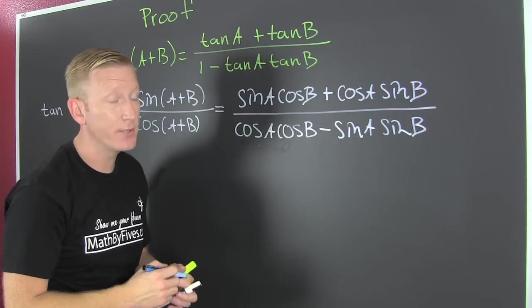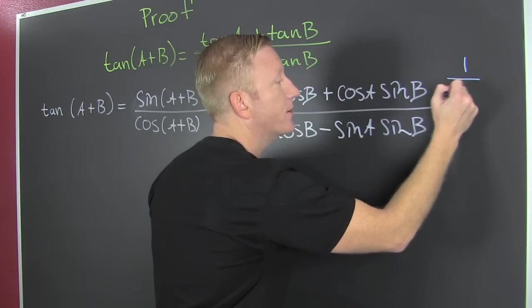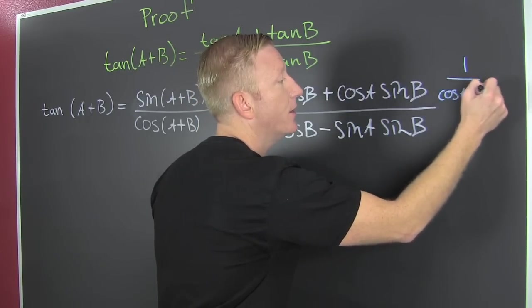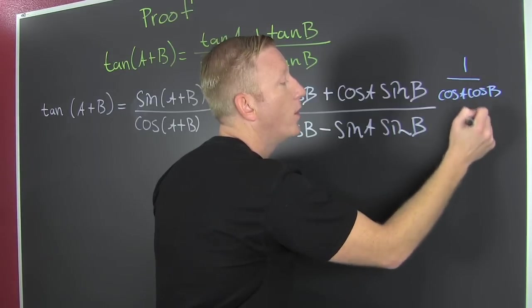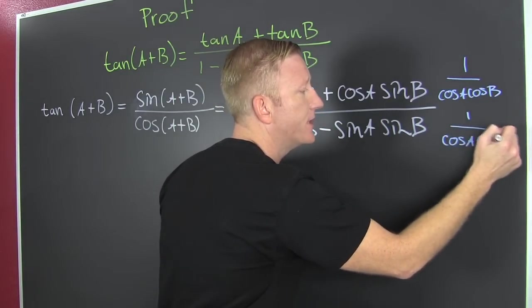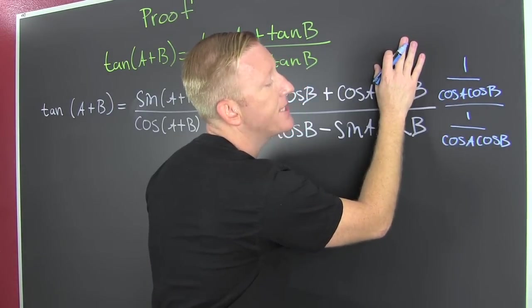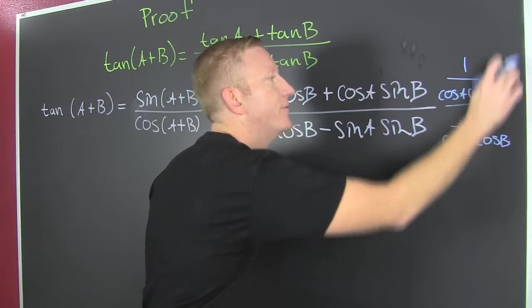So we're really not dividing. We're multiplying by a magic one and it's this one. One over the cosine of A, the cosine of B. One over the cosine of A, the cosine of B. So what's that going to get us? We're dividing by a magic one, albeit fancy.